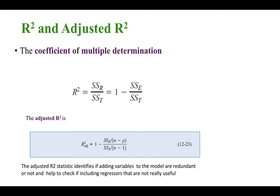To determine to what extent the independent variables explain the variation in the dependent variable, we calculate a statistic called R-squared, also referred to as the coefficient of multiple determination. It is calculated from the ANOVA as the sums of squares due to regression divided by the sums of squares due to total. There is also the adjusted R-squared, which identifies whether adding variables to the model is redundant — helping to check if included regressors are not really useful.